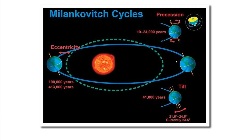Milankovitch calculated that 65 degrees latitude was critically important for this, and that variations in sunlight at that latitude are about 25% between glacial cycles and interglacial cycles. I want you to remember these numbers because in a minute I'm going to show you how Potholer tries to deceive you.